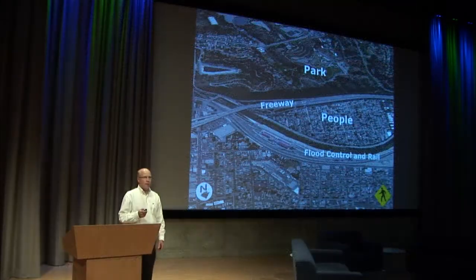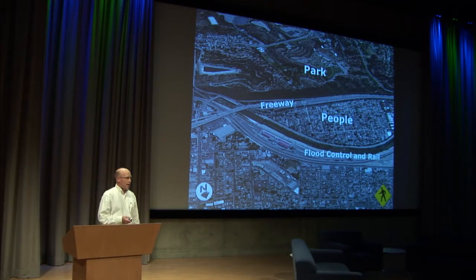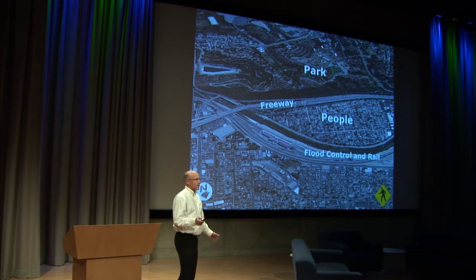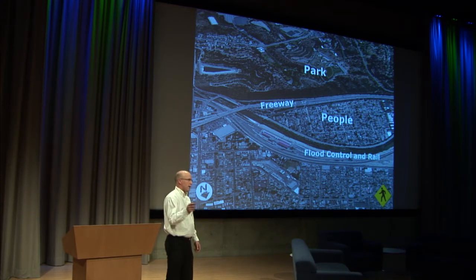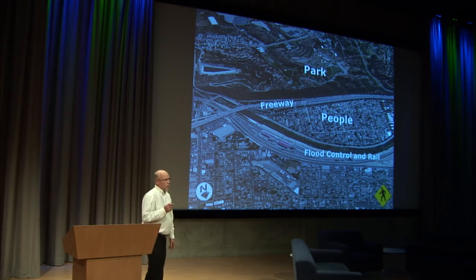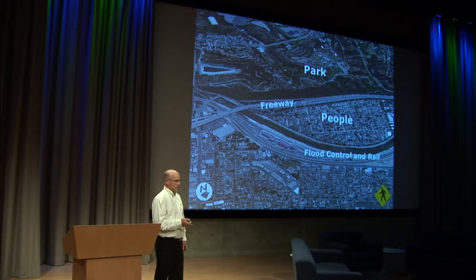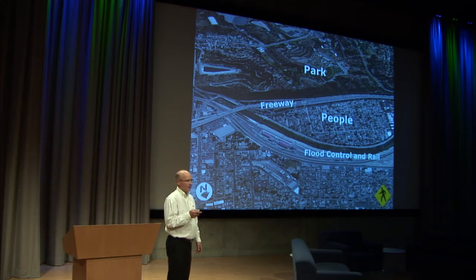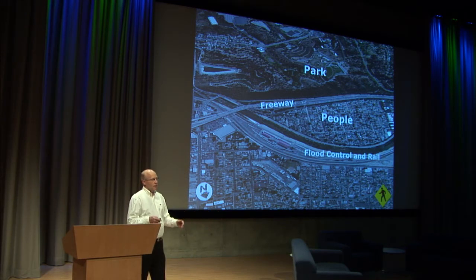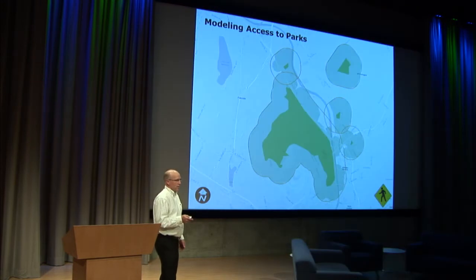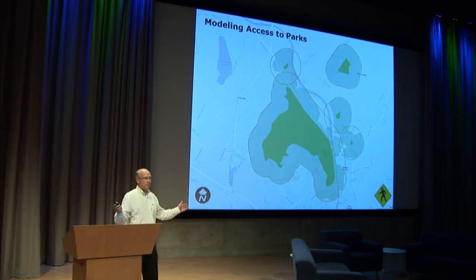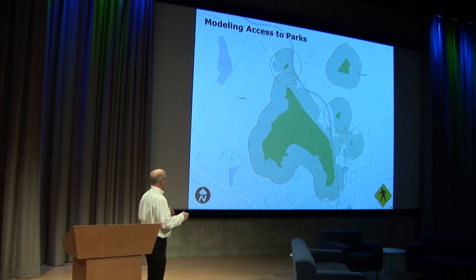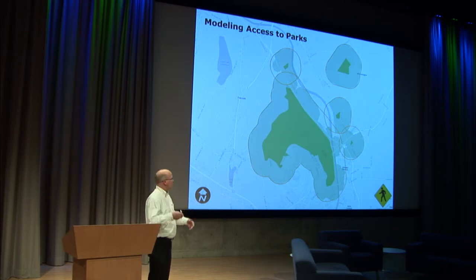Network analysis caused a real problem for us in that we have many different constituents. They all wanted their data in — the equestrian trail data, the bike trail data — all coming from different layers. We decided to model pedestrian movement similarly to the way we would model water movement, making the park the destination and asking where people can come from across the surface to reach it — very much like making a pour point in a watershed and measuring where water could come from within that area.